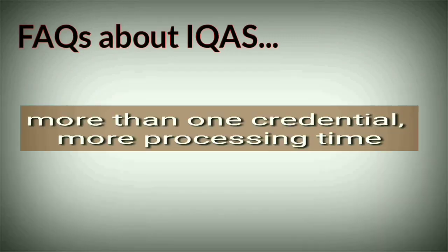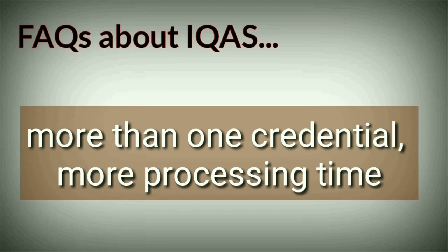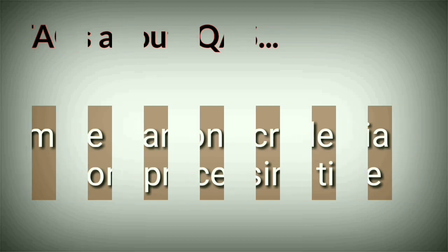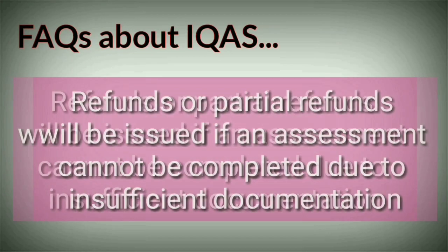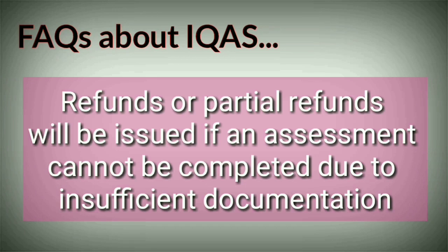If you are applying for more than one credential, your processing time may rise beyond 18 weeks. If your current name on your passport is different from the name on your education documents, then you need to submit proof of name change. IQAS will give refunds or partial refunds if an assessment cannot be completed due to insufficient documentation.